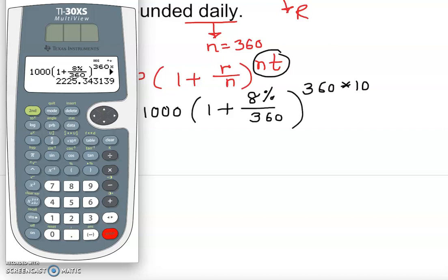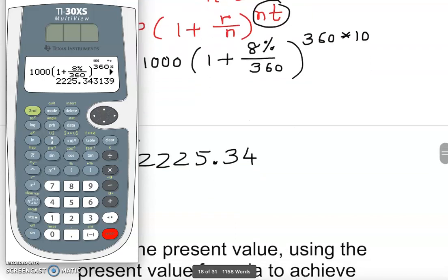The answer is A equals 2225.34. That is the amount which is the future value. We must round to the hundredth place.